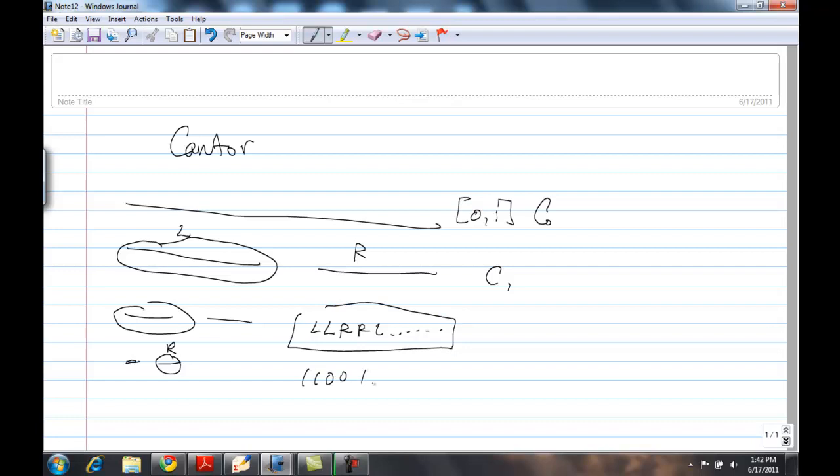This is really just a sequence of 1s and 0s, if you like. And since we know this is uncountable by Cantor's diagonalization argument, the Cantor set is uncountable. But it has measure 0, because the length here is 1.